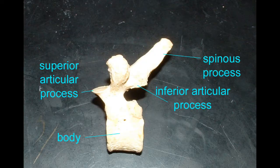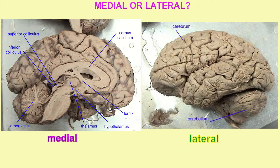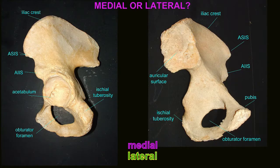If one were looking at an image of an anatomical structure, very often the label of the image would indicate whether this is a medial or a lateral view. So for example, with the brain, the medial view would show a section of the corpus callosum.